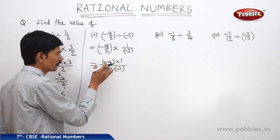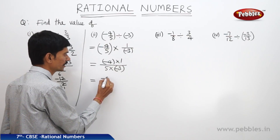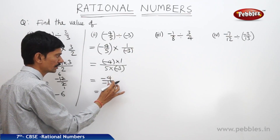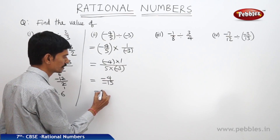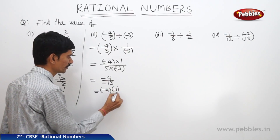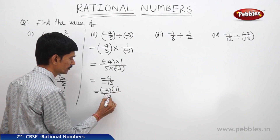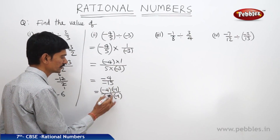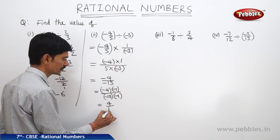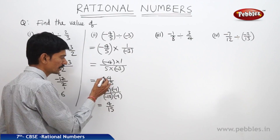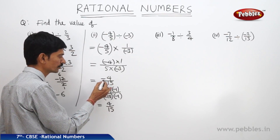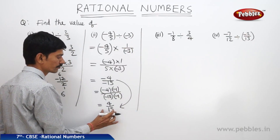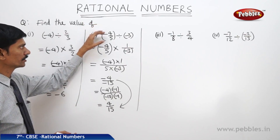When we multiply minus 4 by 1, we get minus 4, and 5 into minus 3 is minus 15. Multiplying both numerator and denominator by minus 1 gives minus 4 times minus 1 over minus 15 times minus 1, which equals 4 by 15, since minus times minus is plus. Alternatively, we can directly cancel the minus signs in both numerator and denominator to get 4 by 15. This is the quotient when we divide minus 4 by 5 by minus 3.